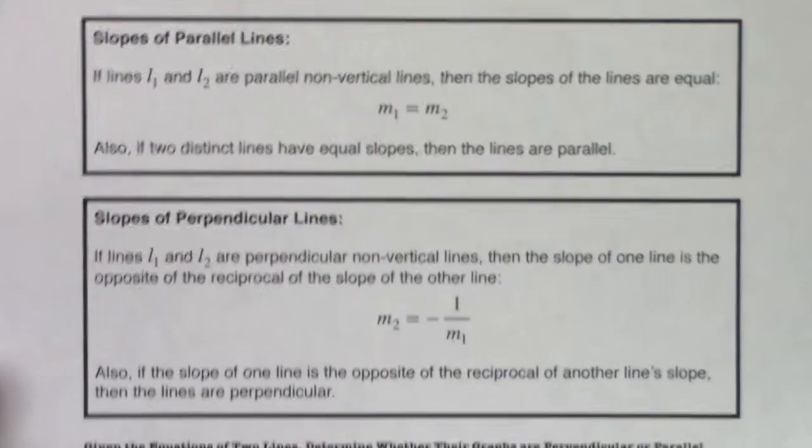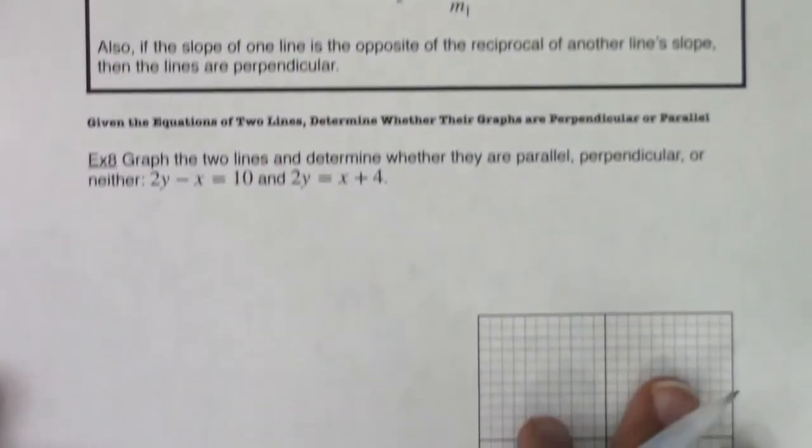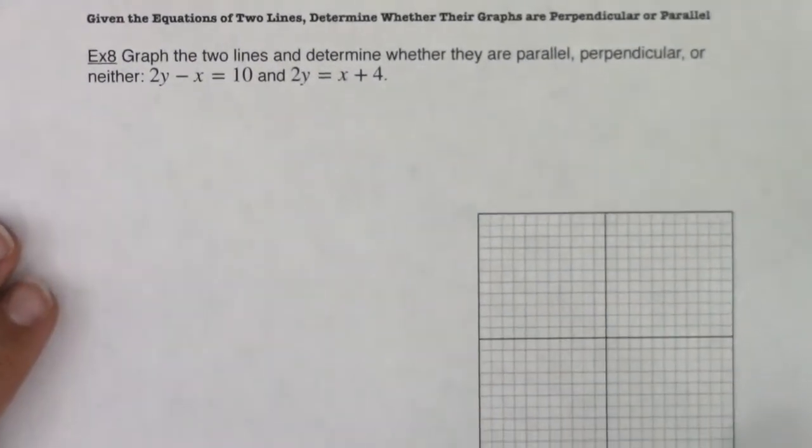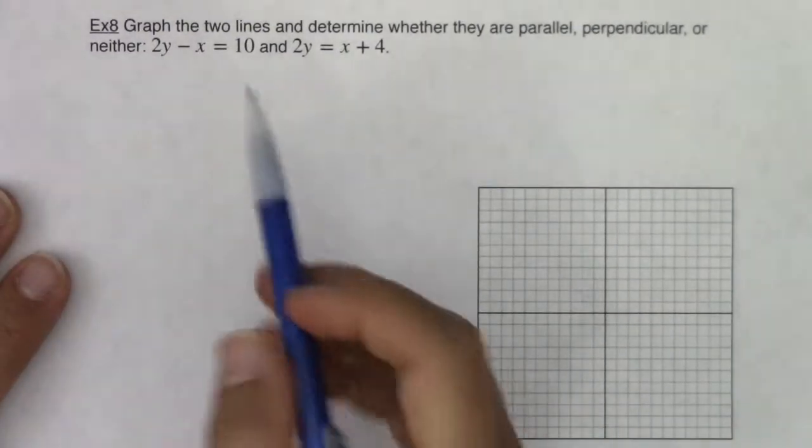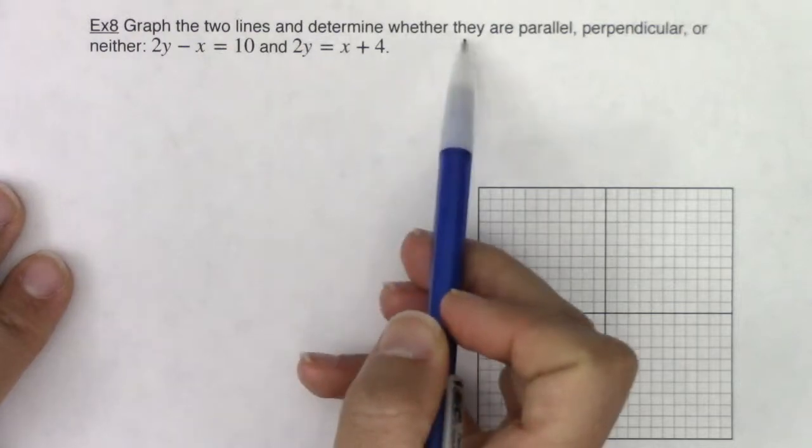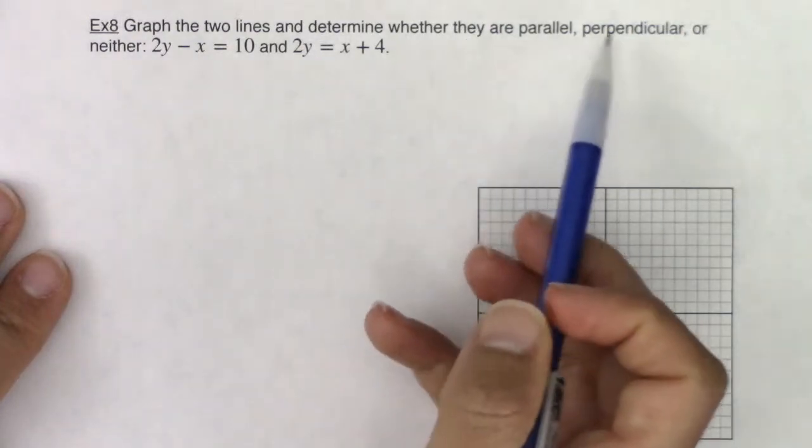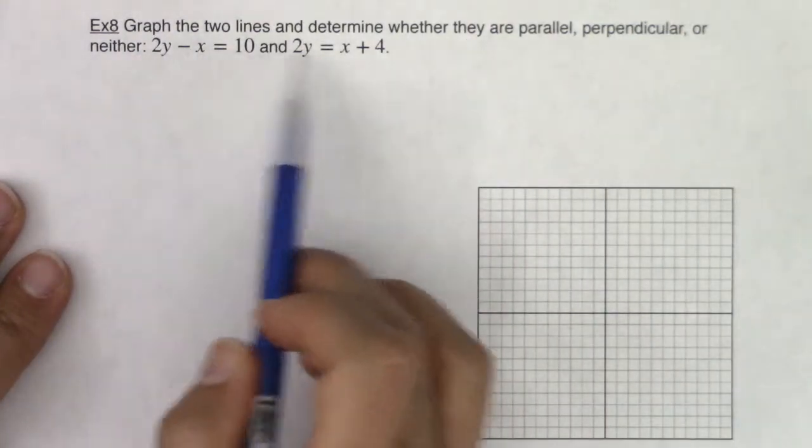Okay, so I'm going to scooch this way up so we can get the entire problem and its graph into view. There we go. So this is saying graph the two lines and determine whether they are parallel, perpendicular, or neither. And here are our two lines.